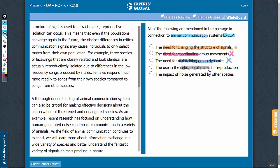Answer choice D: Use in the selection of mates for reproduction. The second paragraph mentions the selection of mates, so this answer choice is mentioned. Let's eliminate it.